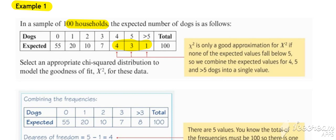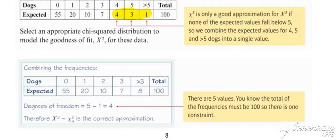What we've done is combined the last three categories and called that anything greater than three. We've combined the frequencies to give us a value of eight there, because that's bigger than five. Now, once you've combined the frequencies, you consider the degrees of freedom.